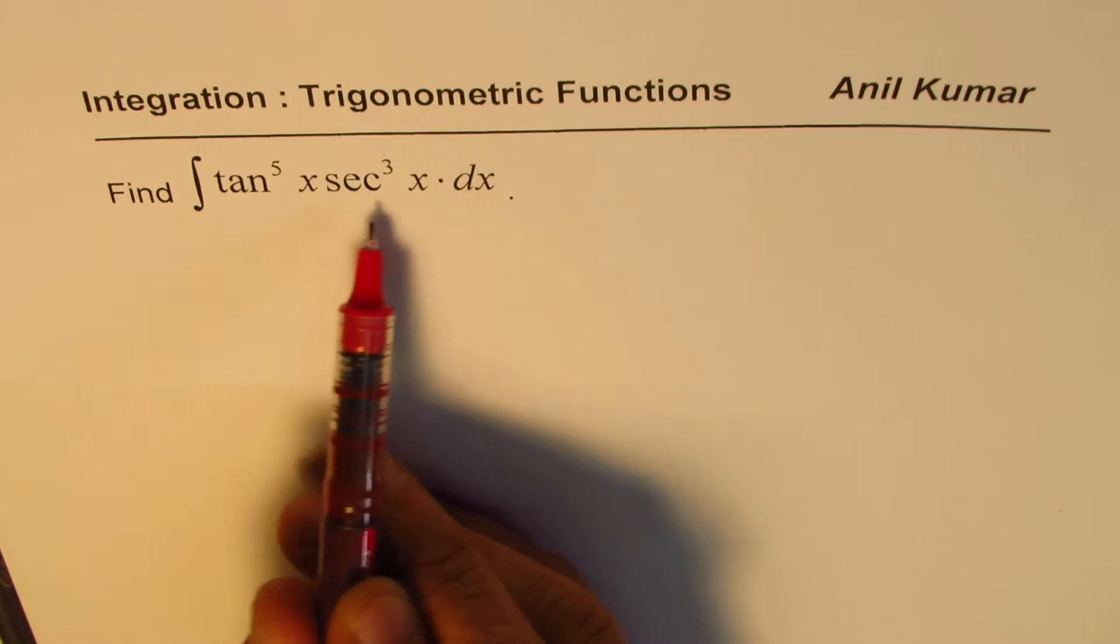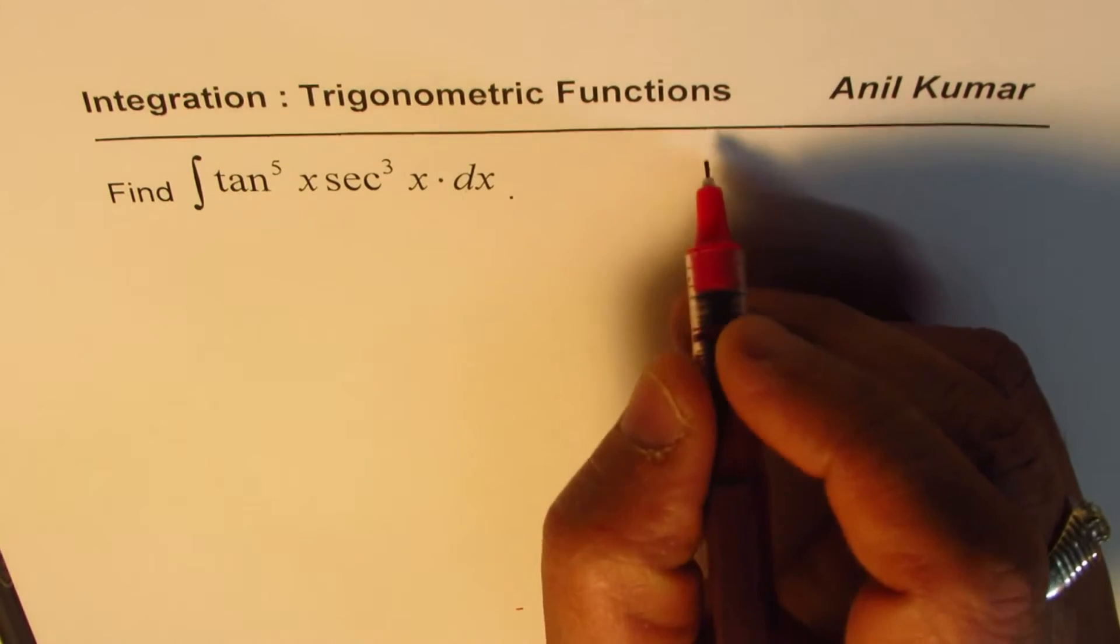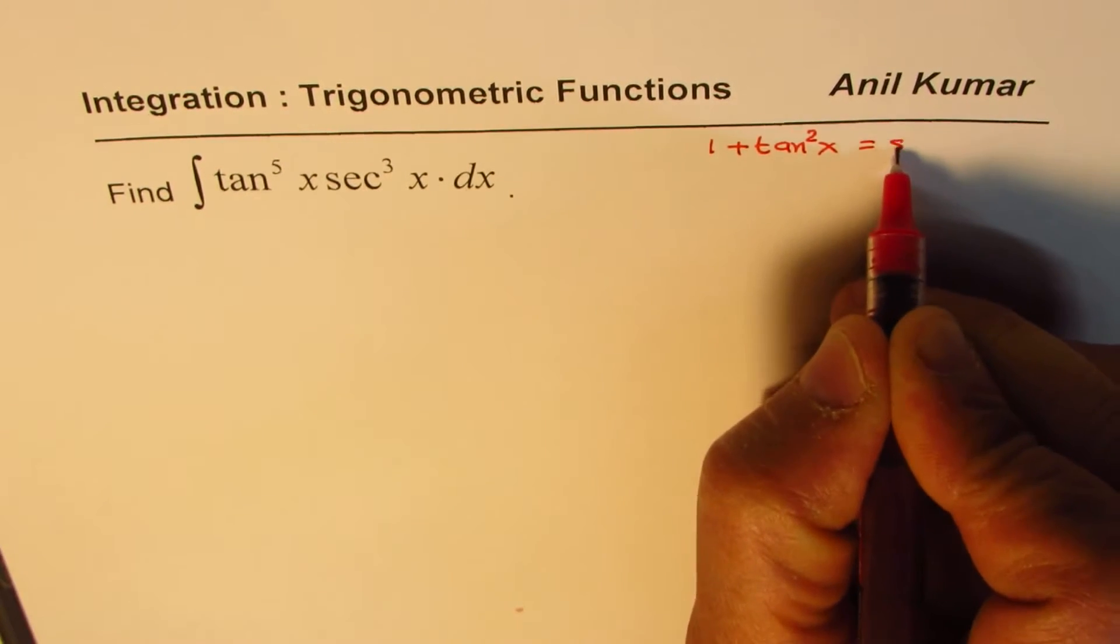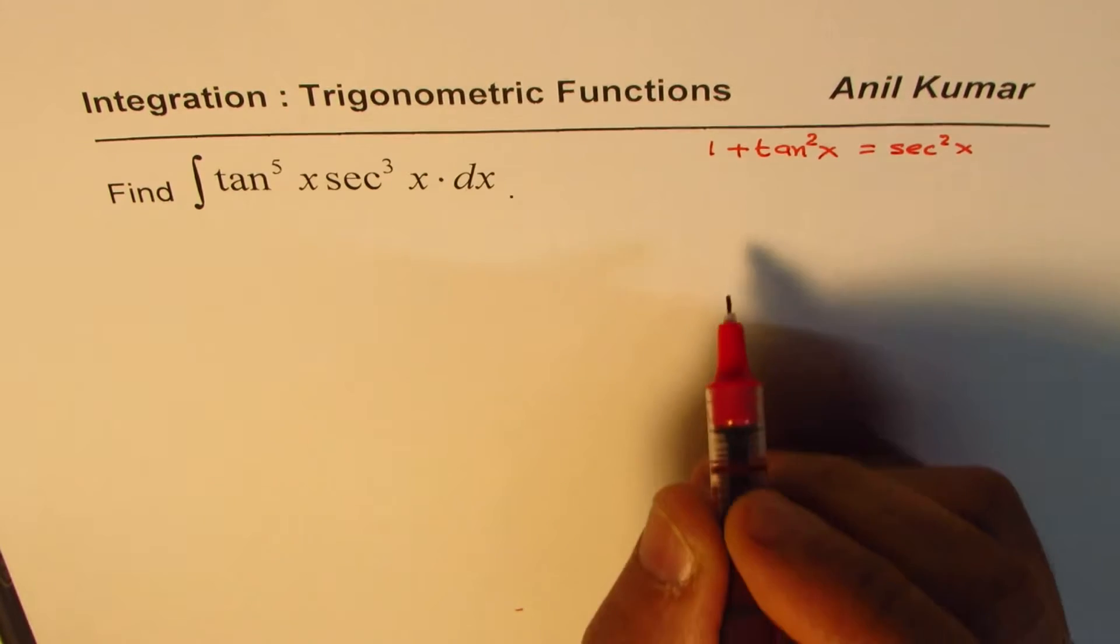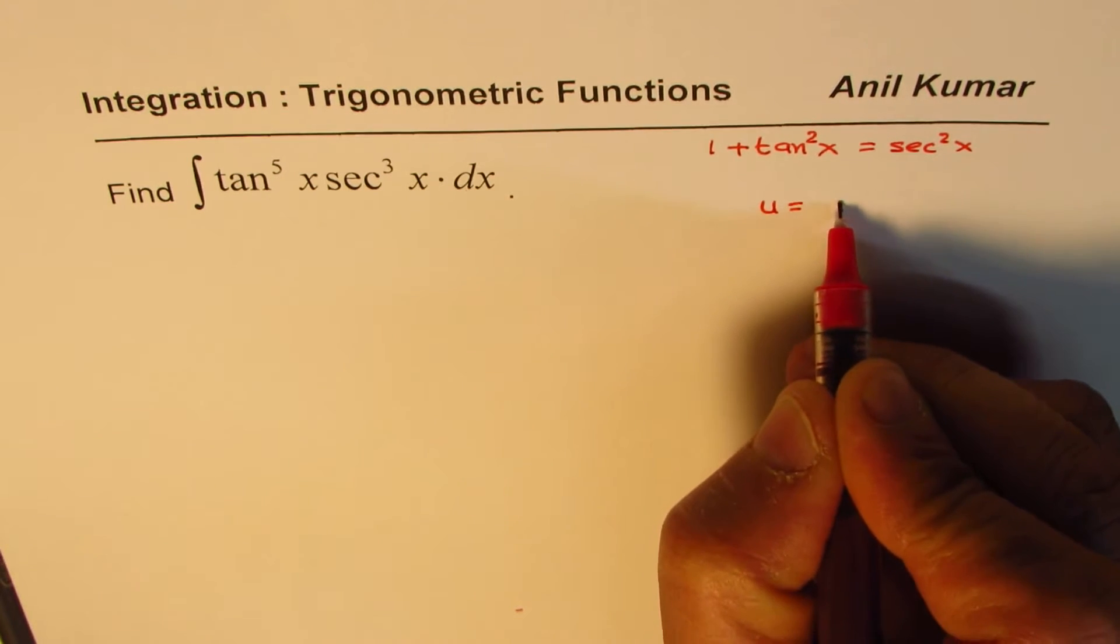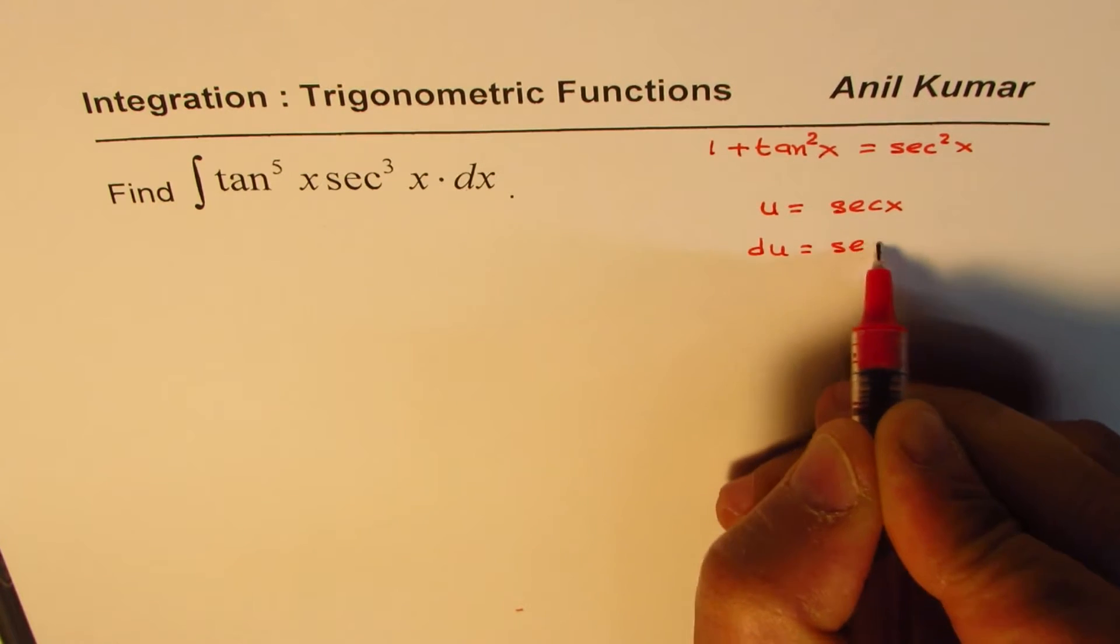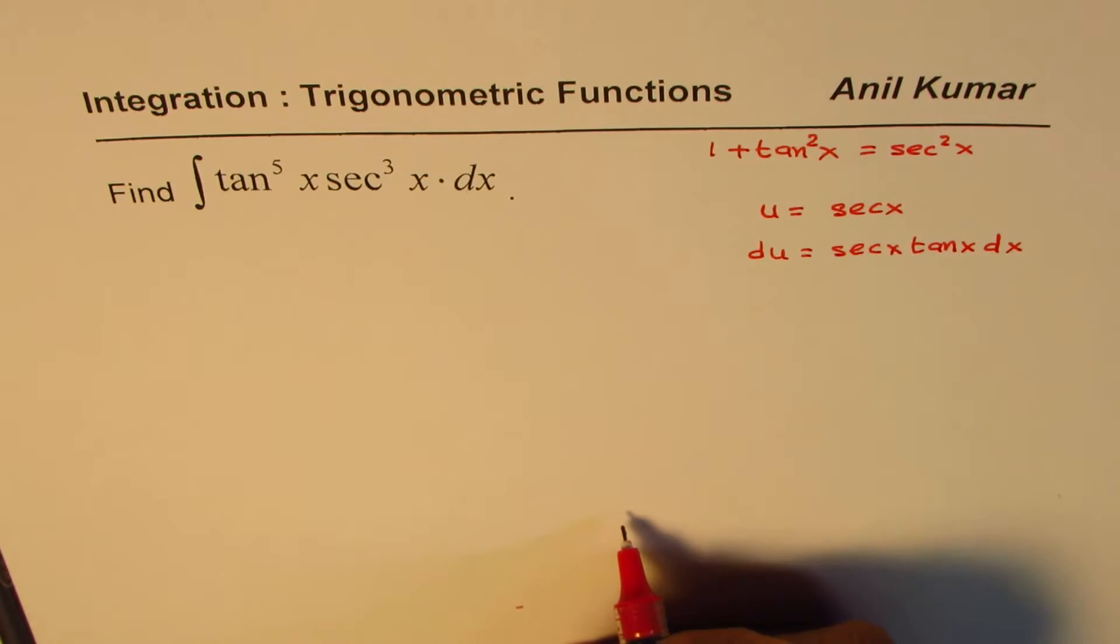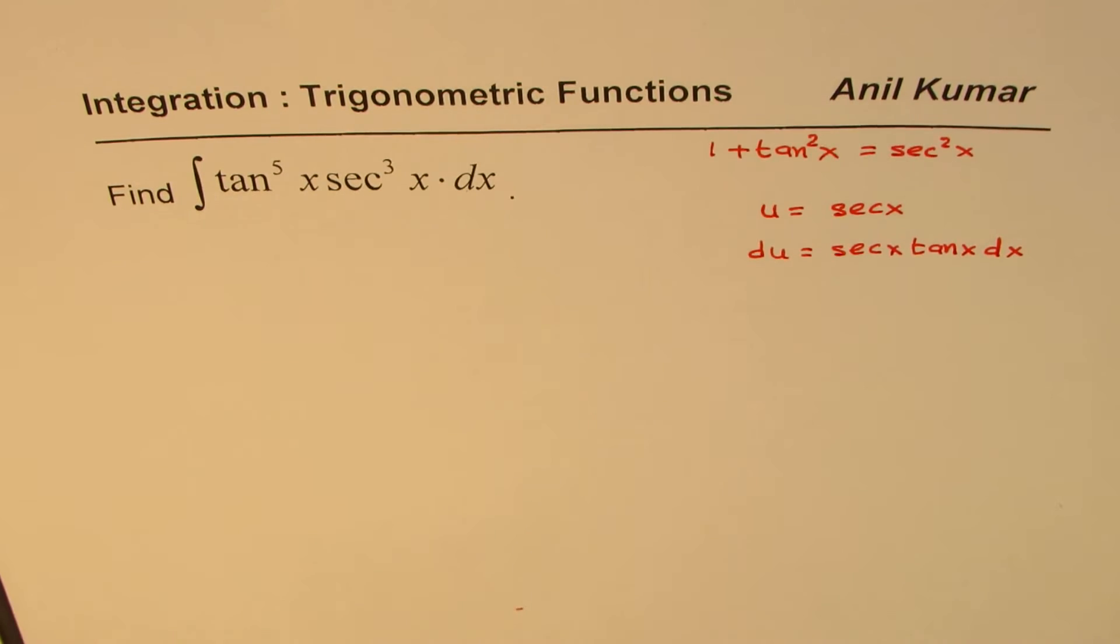As you note here tan and secant are actually very much related and we know a couple of relations between them. One of them is 1 plus tan square x equals secant square x and you also know what is the derivative of secant x. The derivative of secant x is, let us say if I have a variable u defined as secant x, in that case du will be equals to secant x tan x dx. So that is how they are very much related. We need to take advantage of this to solve such integrals.